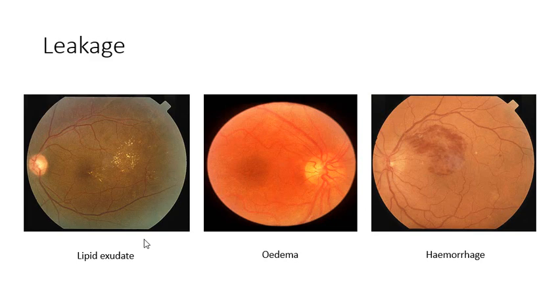The exudates have well-defined margins and will usually be found around the macula, as shown in this image, or around the mid-peripheral retina. This particular eye has got them in both locations.